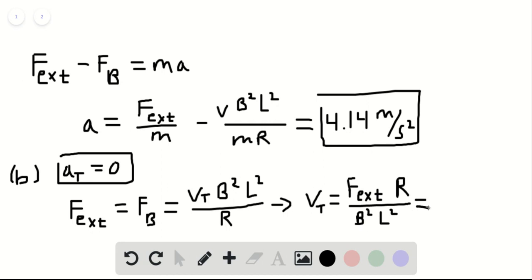Plugging those values into this expression, we find that this is equal to 0.0669. The units here are meters per second. We can box this in as the second part of the solution for part B.